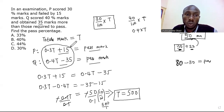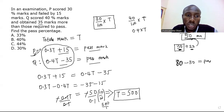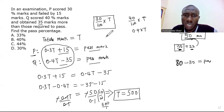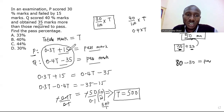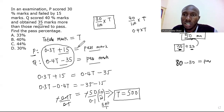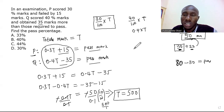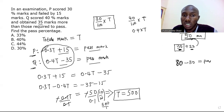With T = 500, we can verify the scores. P scored 30% of 500 = 150. Q scored 40% of 500 = 200. So P scored 150 and Q scored 200.